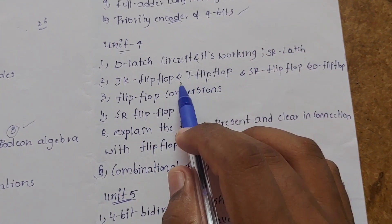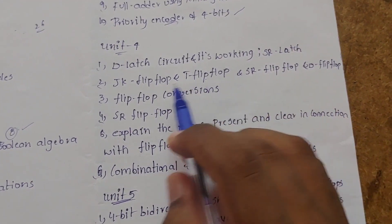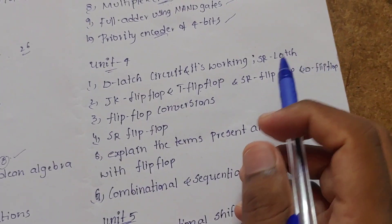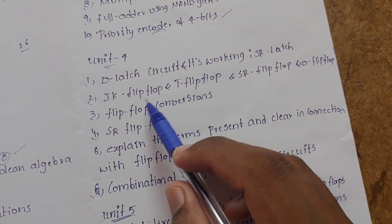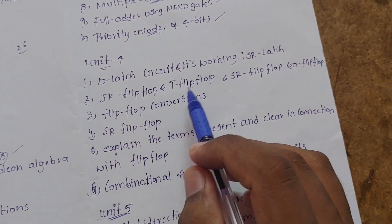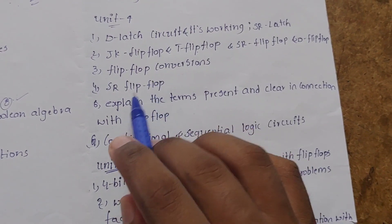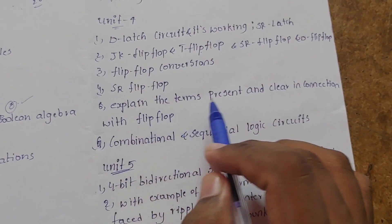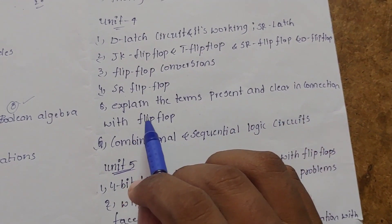There are JK flip-flop, T flip-flop, and their conversions. These are 4 flip-flops: JK, T, SR, and D. These are 4 conversions: JK, SR, T, D flip-flop, T flip-flop. There are flip-flop conversions, there are SR flip-flop. I will explain the terms present and clear in connection with the flip-flop.